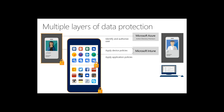Intune gives us the ability to apply device policies and also policies to the applications on devices. For example, OneDrive has both a consumer version and a commercial OneDrive for Business version, now accessed through a single app. Using Microsoft Intune, we can apply policies and control not only the device but also the applications and data that reside on those devices.